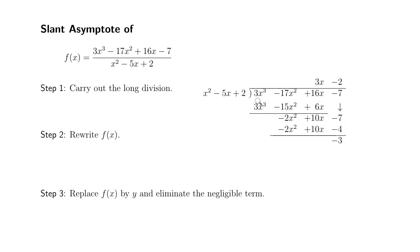Then go through the subtraction. These two guys cancel out. Negative 17x squared minus negative 15x squared, so it's going to be adding 15x squared. So you have a negative 2x squared. 16x minus 6x is 10x. Then we'll bring down the negative 7 here.